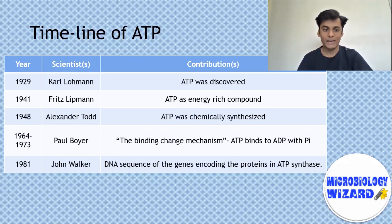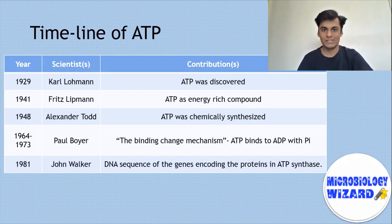Later on in the 1960s, 1964, Paul Boyer understood the mechanism of ATP and ADP cycle. Since then, with the help of molecular genetics, genomic studies and proteomic studies, we are now able to understand the mechanism of ATP synthase, the enzyme that encodes ATP, and through genomic and proteomic studies, we are able to understand the sequences through which the ATP synthase works.